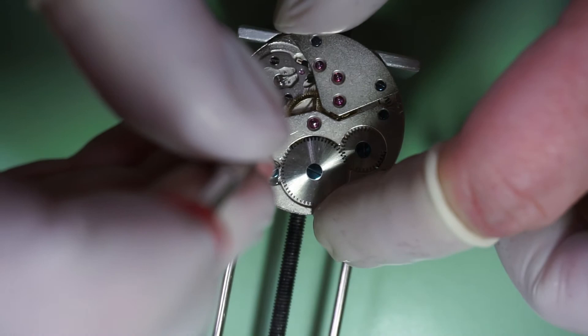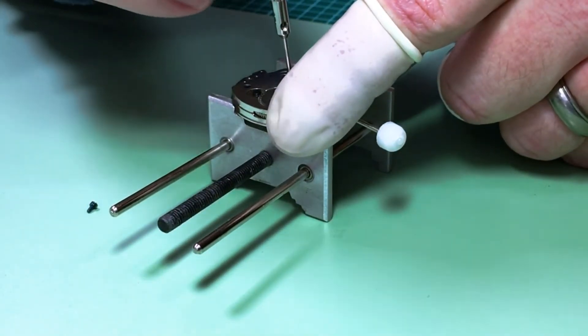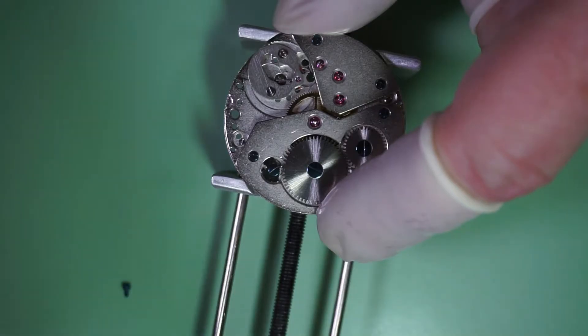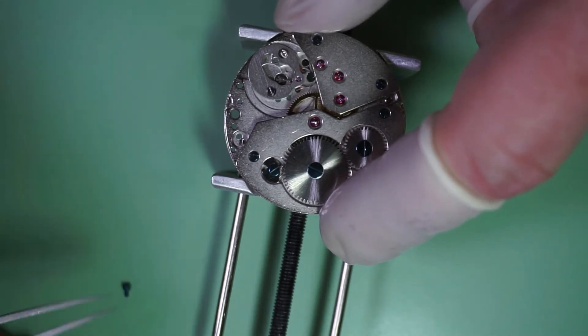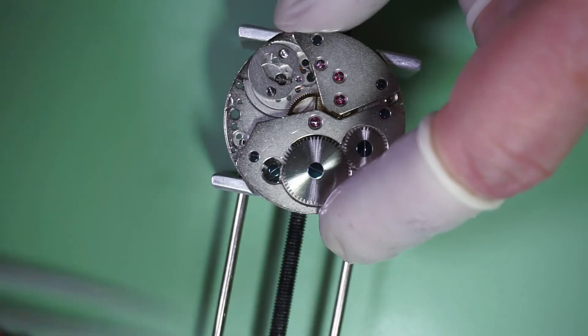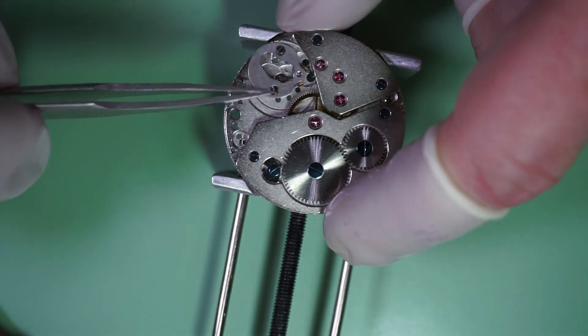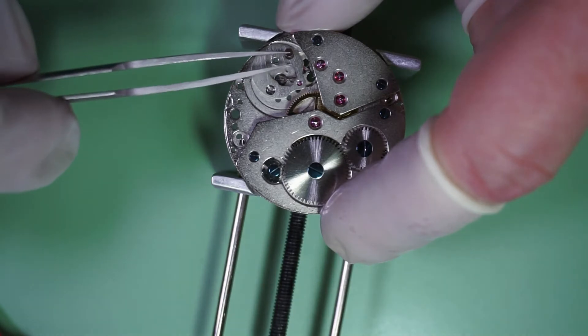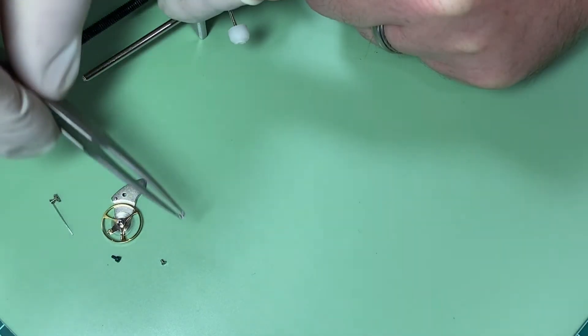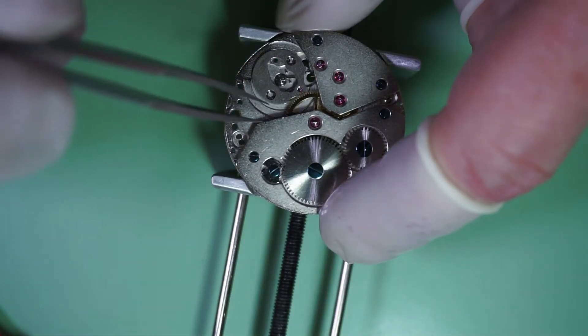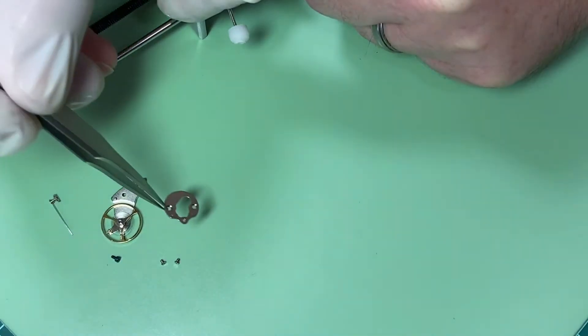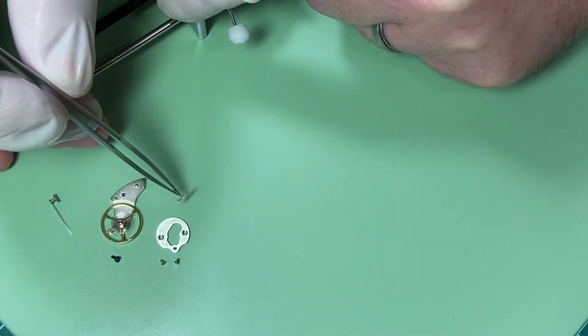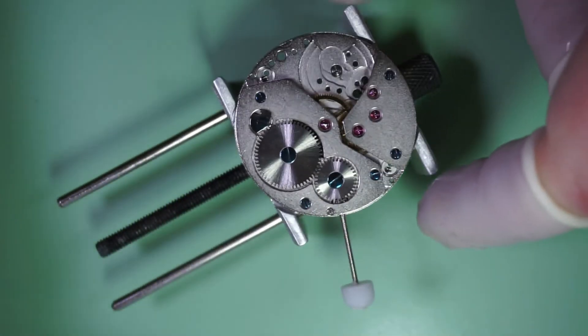Next, we need to remove the pallet fork bridge. Incidentally, when the balance fork is held in place with a bridge that only has one screw, that's called a caulk. Now I'm placing these all on the table in such a way that they will stay together yet you will be able to see all the pieces and their corresponding screws. This is the ever so delicate pallet fork. And with that out, I feel a great sigh of relief.